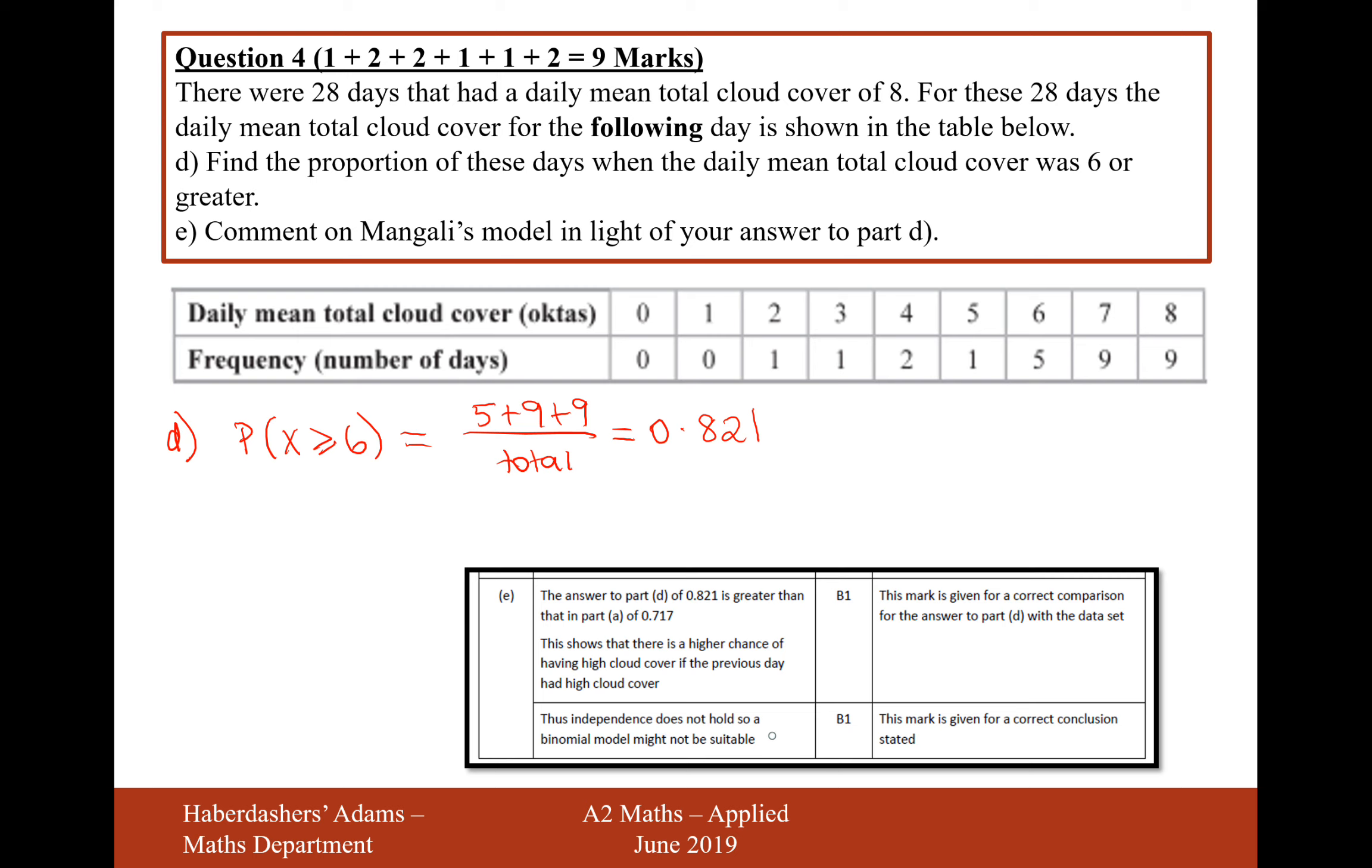Independence does not hold, so a binomial model might not be suitable. Because whenever you use a binomial distribution, independence of the different trials is really important. The effect on one day's octaves, if it's a binomial model, shouldn't have an effect on the next day's octaves, but it does look like it does in this day here. It looks like if it's very cloudy the day before, on eight octaves, that there is a 0.821 probability that it will be six or more the day after, which is higher than 0.717, which is the probability of six or more octaves on any given day. So it looks like independence is not held in this model, so therefore a binomial model might not be suitable. But it's certainly very accurate in our calculations on questions B.